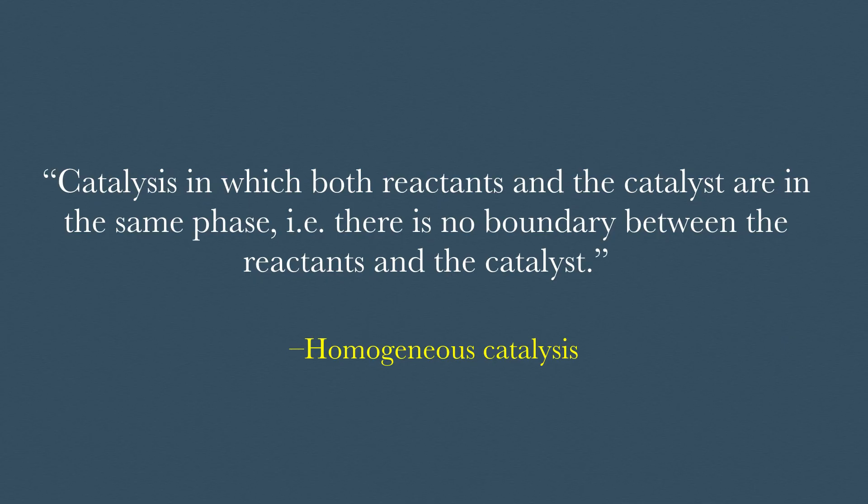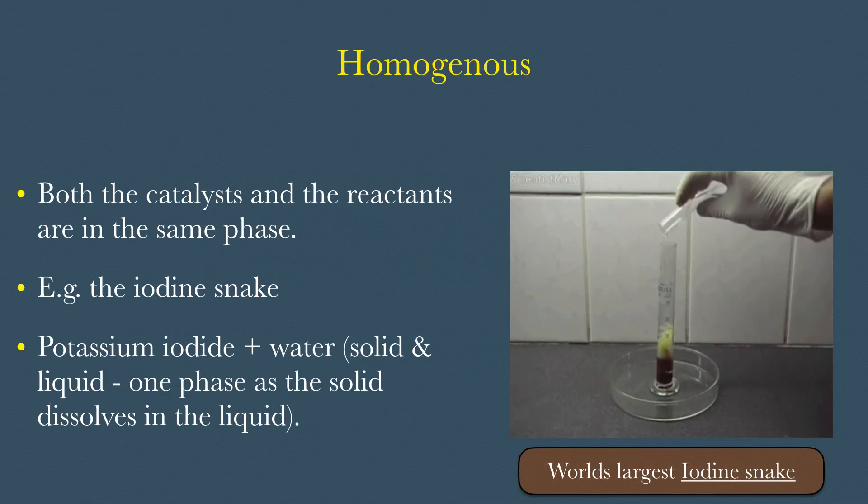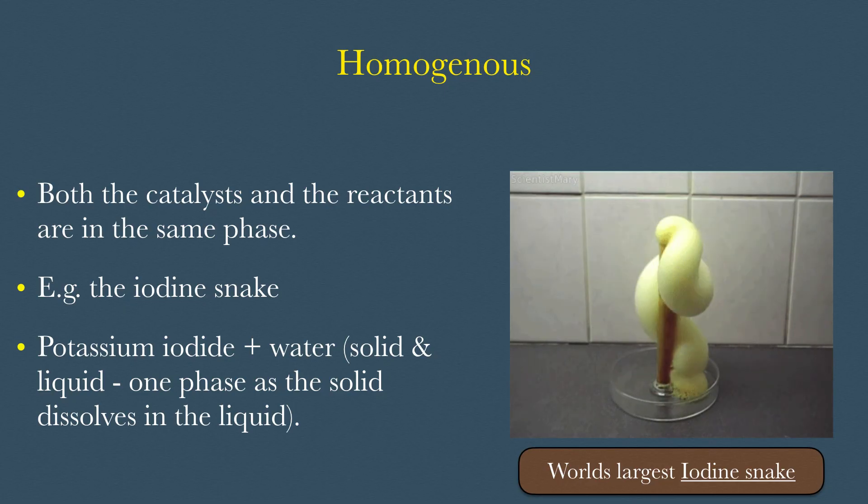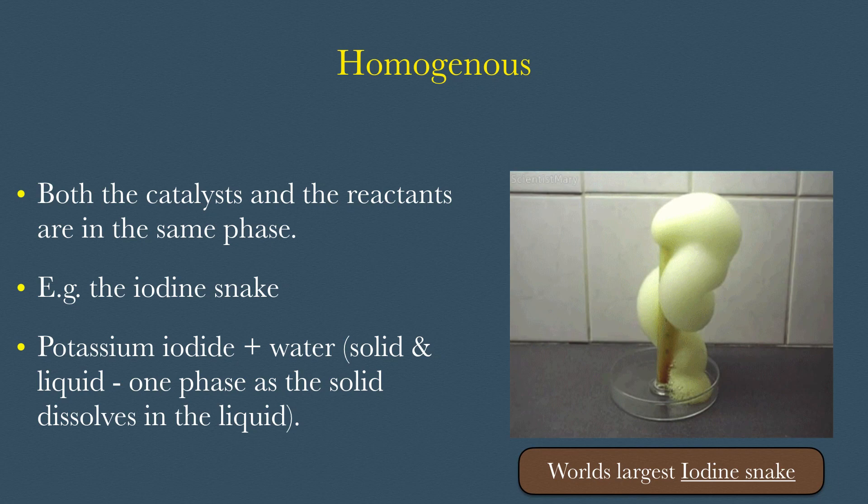Homogeneous is a catalyst in which both reactants and the catalyst are in the same phase, i.e. there is no boundary between the reactant and the catalyst. Homogeneous states that the catalysts and the reactants are in the same phase. For example, the iodine snake involves potassium iodide dissolved in water, i.e. they are in the same phase.